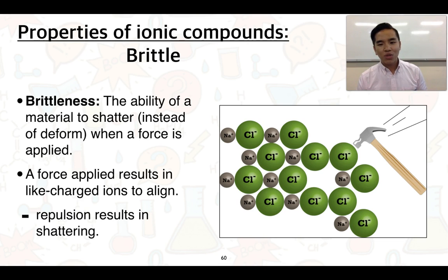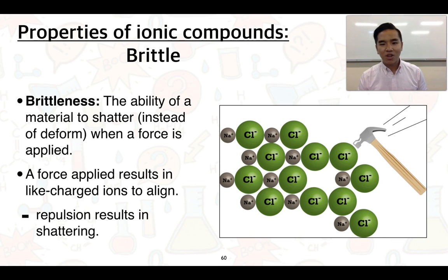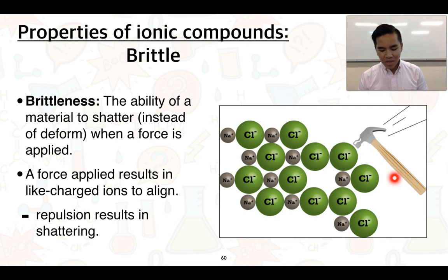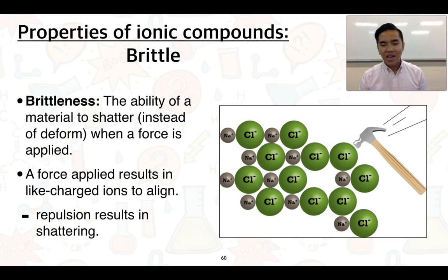However, when we do apply a force, we notice that we can actually shatter ionic compounds - salt is a good example. We can apply a force and easily turn salt crystals like rock salt into a smaller powdered form, so we would say that salt is brittle. Looking at the diagram, we've got a hammer bashing away at some sodium chloride. As we bash away, we cause like-charge ions to align, and since like charges repel, it causes the ionic compound to shatter and break apart into smaller crystalline structures. The repulsion is what causes that shattering.